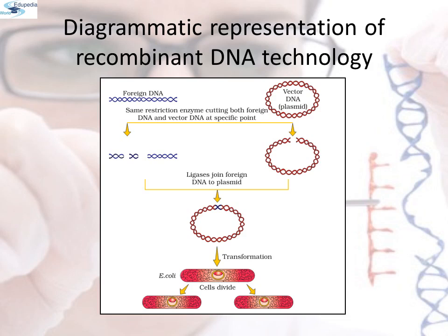Here is a diagrammatic representation of recombinant DNA technology. A foreign DNA and a vector DNA plasmid are both cut by the same restriction enzyme at specific points, and ligase joins the foreign DNA to the plasmid. This is then transformed into E. coli bacteria, and as the cell divides, the vector and the foreign DNA also replicate.